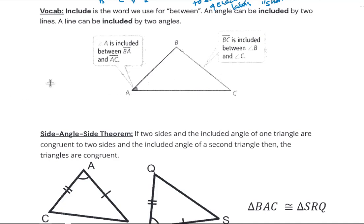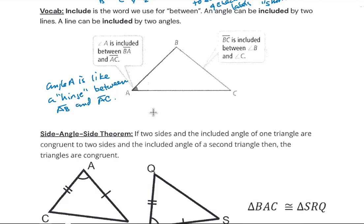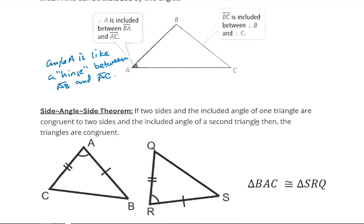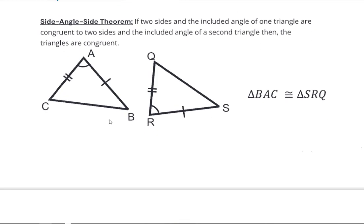We use the word 'included' instead of 'between.' Side AB is included between angle A and angle B. If we look at angle A, it's sort of like a hinge — sides CA and AB are connected together by angle A. As we change angle A, we're changing the degree of slope of those two sides.